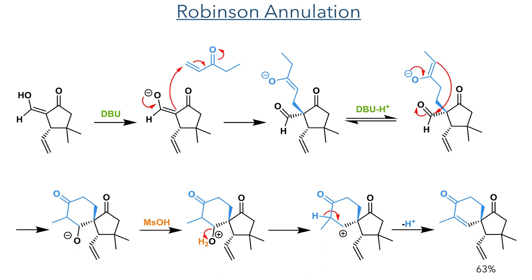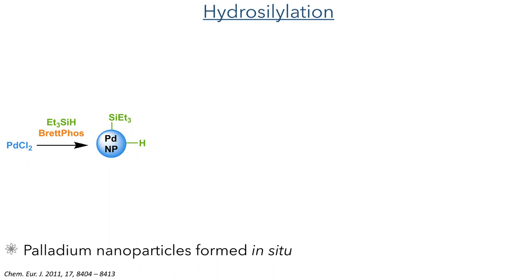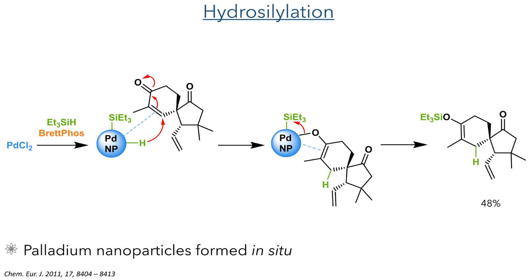This enone was then reacted in the next step in a hydrosilylation. Palladium(II) chloride first reacts with triethylsilane in the presence of the Brettfoss ligand, generating palladium nanoparticles in situ with the silyl group and hydride coordinated to the surface. The hydride first undergoes conjugate addition and the oxygen of the resulting enolate intermediate then coordinates to the palladium nanoparticle. This then reacts with the surface-bound silyl group, generating the TES-protected enolate in a 48% yield.